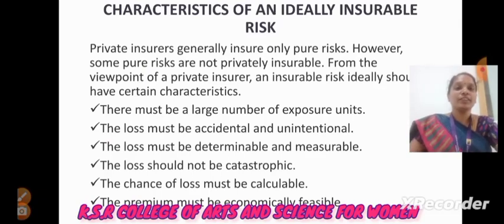Now we are going to see about characteristics of an ideal insurable risk. There must be a large number of exposure units. The loss must be accidental and unintentional. The loss must be determinable and measurable. The loss should not be catastrophic. The chance of loss must be calculable. The premium must be economically feasible.